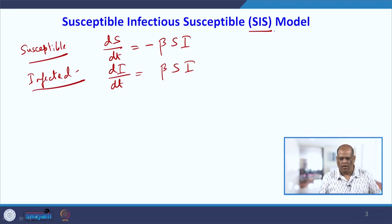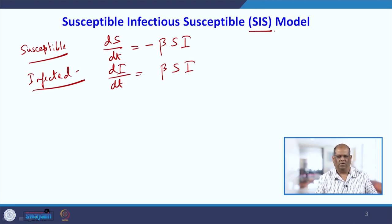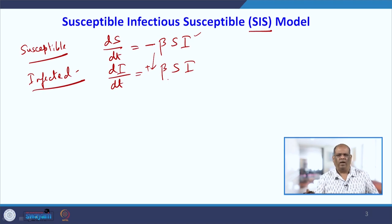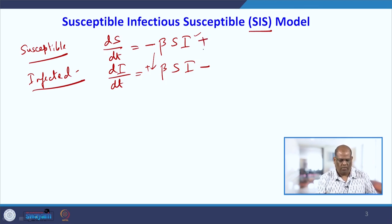What is new in SIS? We are assuming here — you can take the example of common cough and cold — a person comes in contact with another person who is suffering from cough and cold and immediately catches it. From the susceptible class he moves to the infected class; this is negative for susceptible and positive for infected. By taking some medicine which is easily available, you get rid of the cough and cold but again you are susceptible.